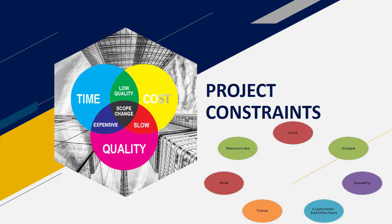There are different things that can influence you such as scope creep, customers, or even your people that you report to, changing the request, or making requests that change other projects you're part of. So there's lots that can affect the project and those constraints are what we need to focus on.